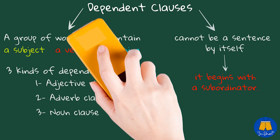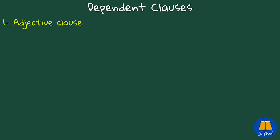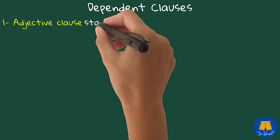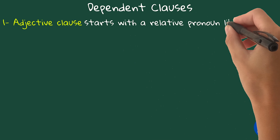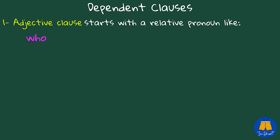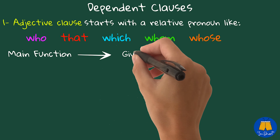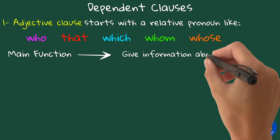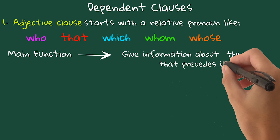An adjective clause is a clause that starts with a relative pronoun like who, that, which, whom, and whose. Its main function is to give information about the noun that precedes it.